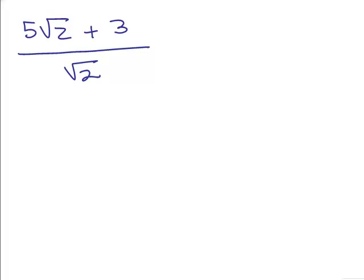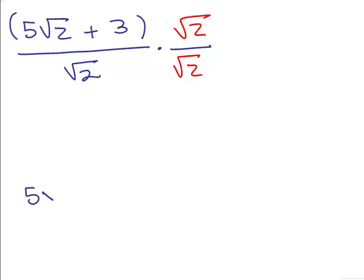What if you had a problem where there's no binomial in the denominator? We could use the old trick of multiplying numerator and denominator by square root of 2 — that's one method. Another thing you can do when you have just a single term in the denominator is split the numerator up so each term goes over the square root of 2. So there are two ways of doing this.